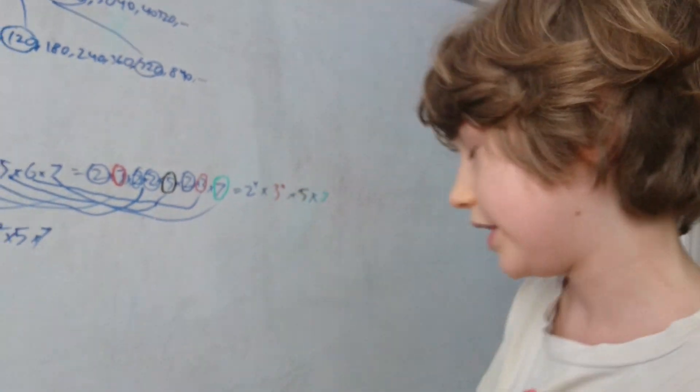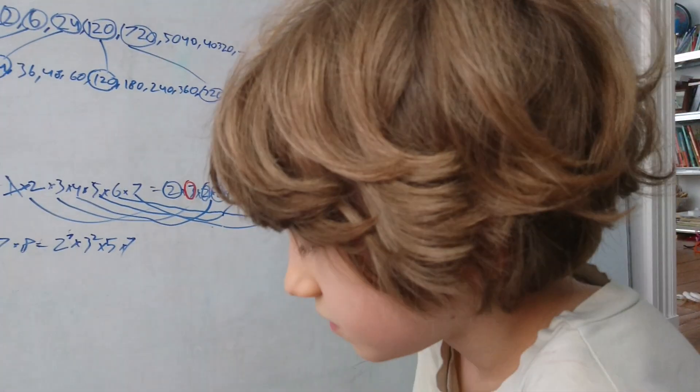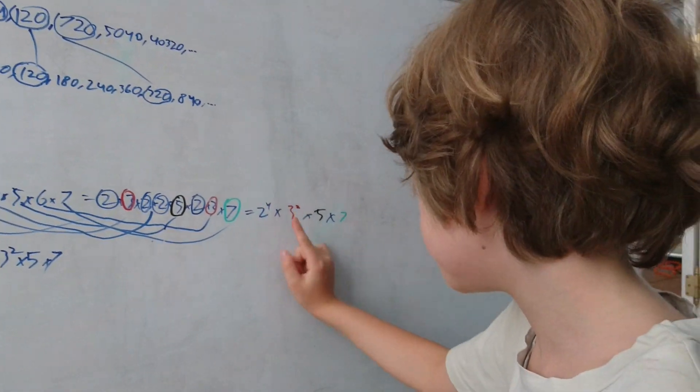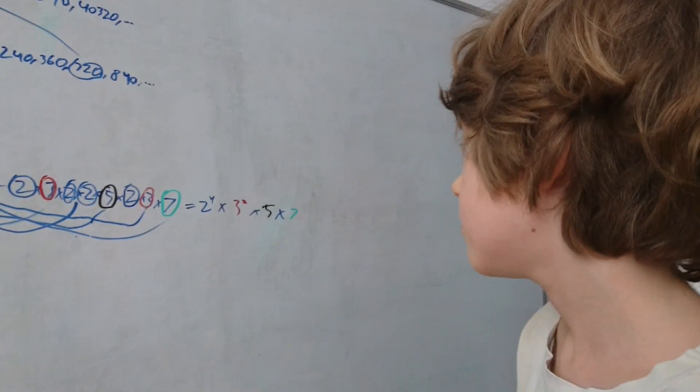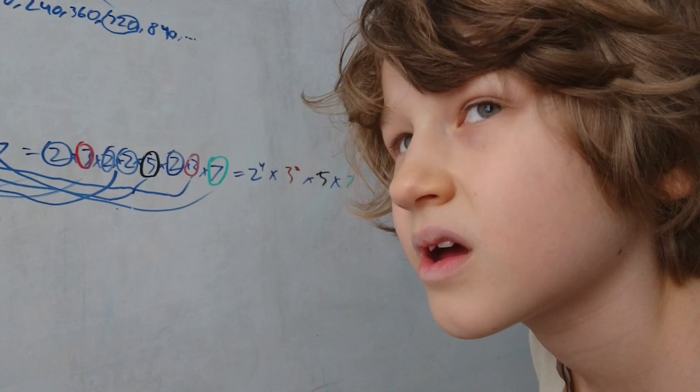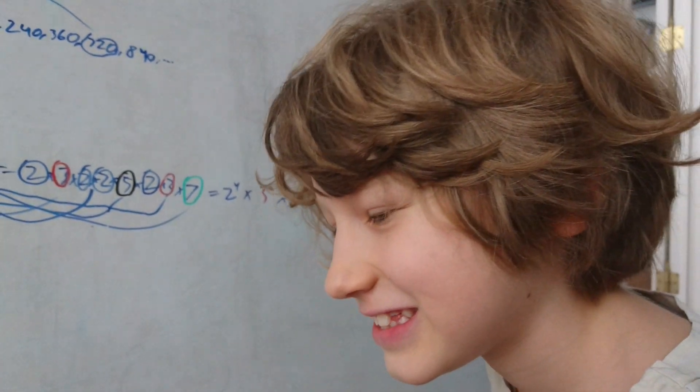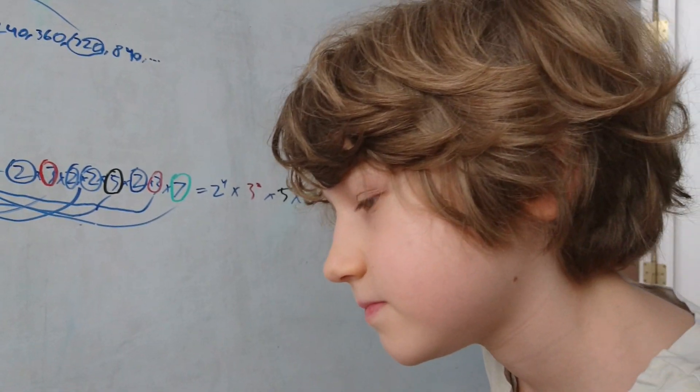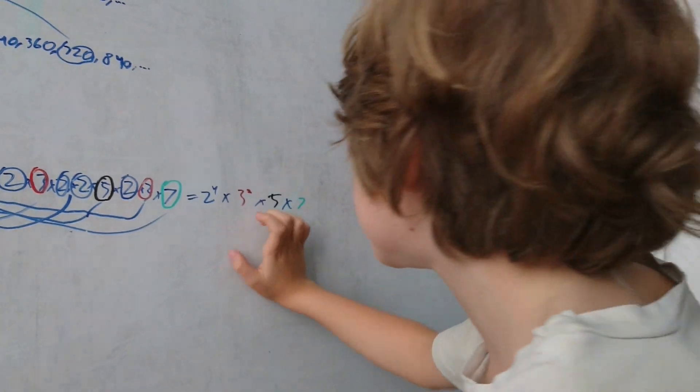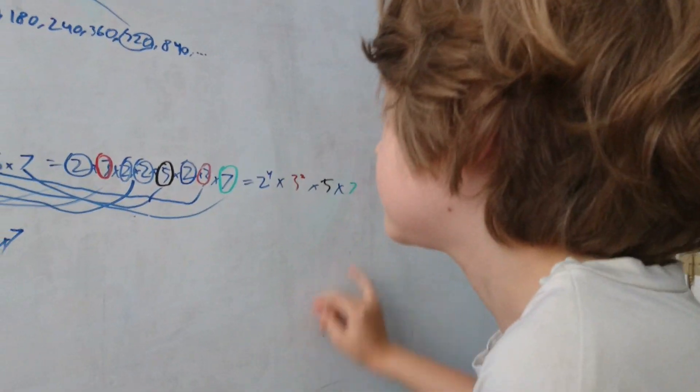5040 has that number. So 2 to the 4 times 3 squared times 5 times 7. Let's see, so 2 to the 4 times 3 squared times 5 times 7 for factorization.